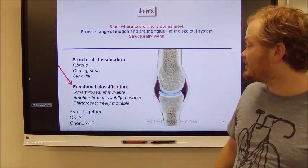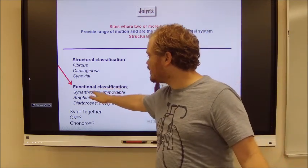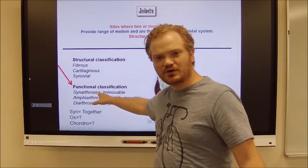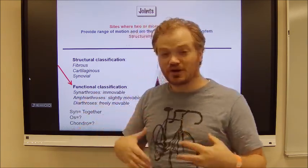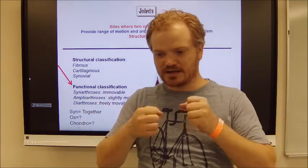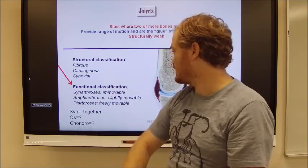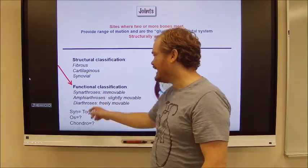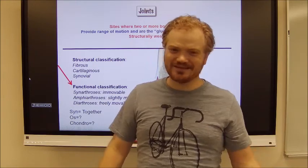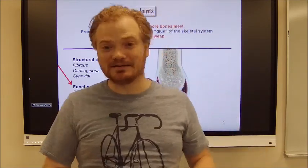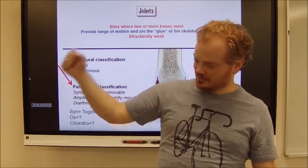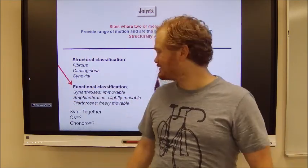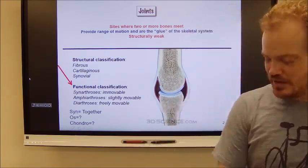We further define those by their functional classes. That can be synarthrotic — synarthroses. "Syn" means together or fixed, and "arthrotic" means junction or articulation, so synarthrotic means non-moving. They are fixed to one another — immovable joints. Amphiarthrotic means kind of moving — they have some give, they bend. And then there are diarthrotic joints, which are freely moving joints — diarthroses, freely moving.